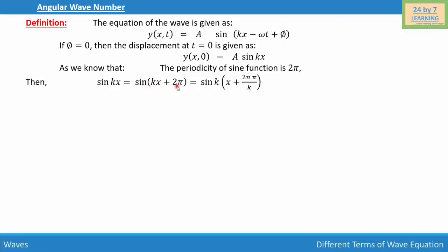And if we take k outside common, then we can write sin k times the bracket (x plus 2n pi over k), where n is an integer, which is basically n is equal to 1, 2, 3, and so on.